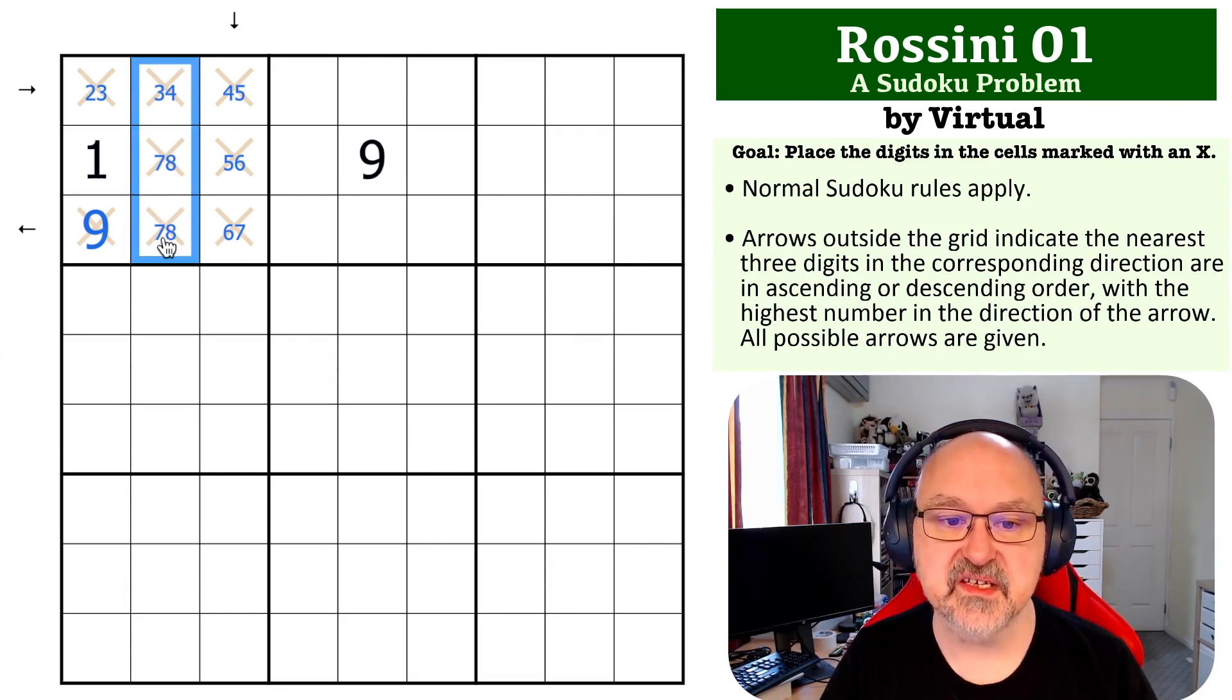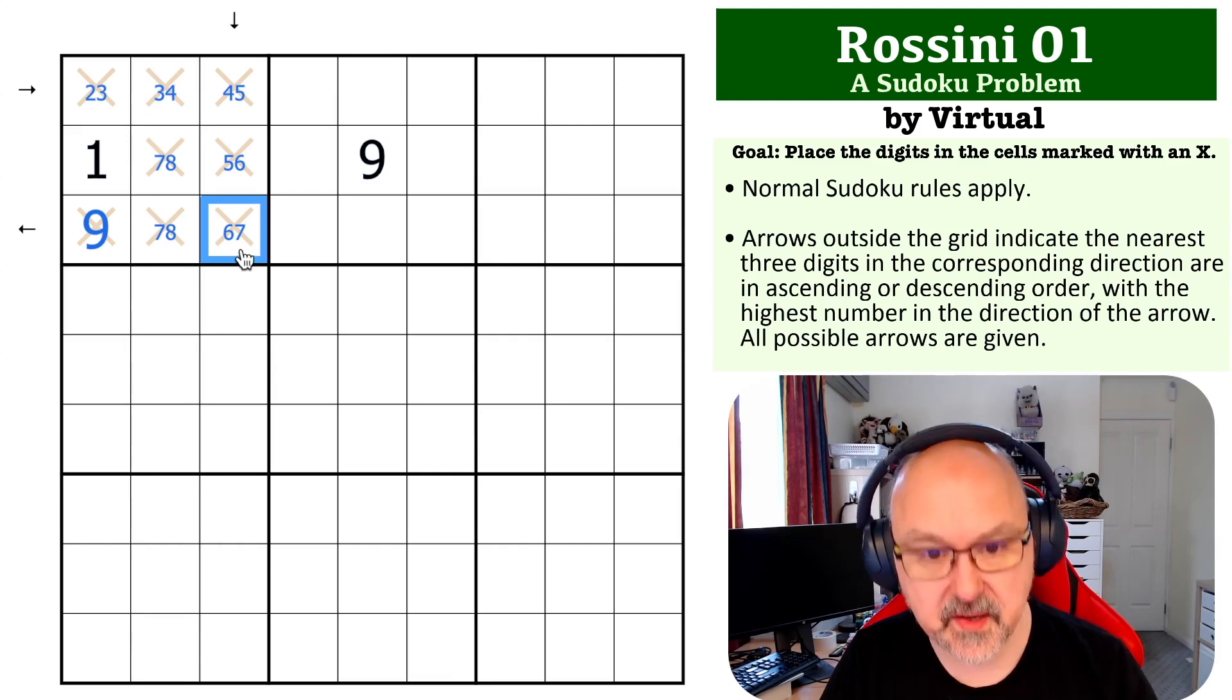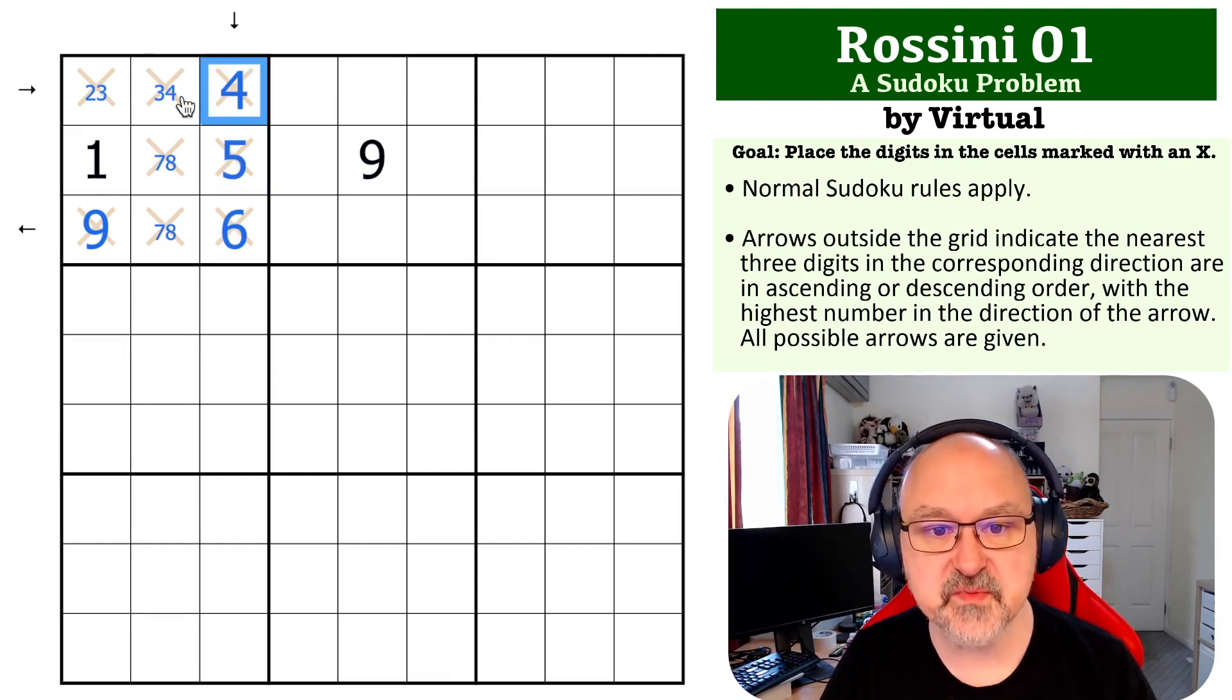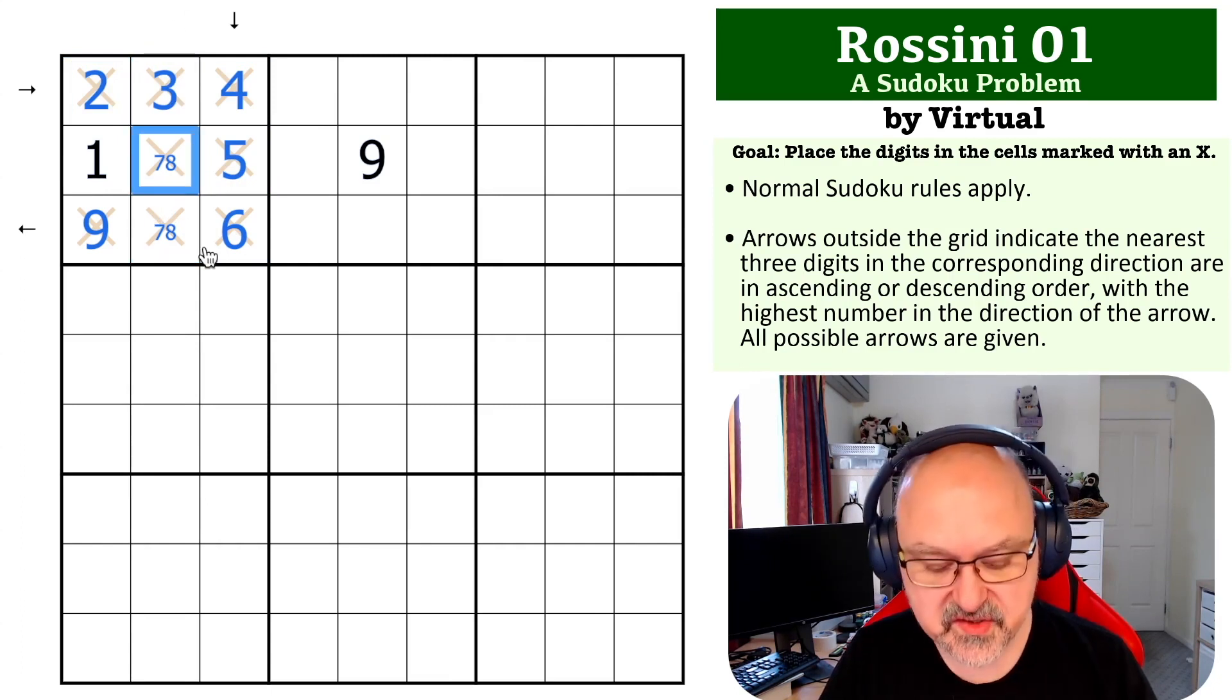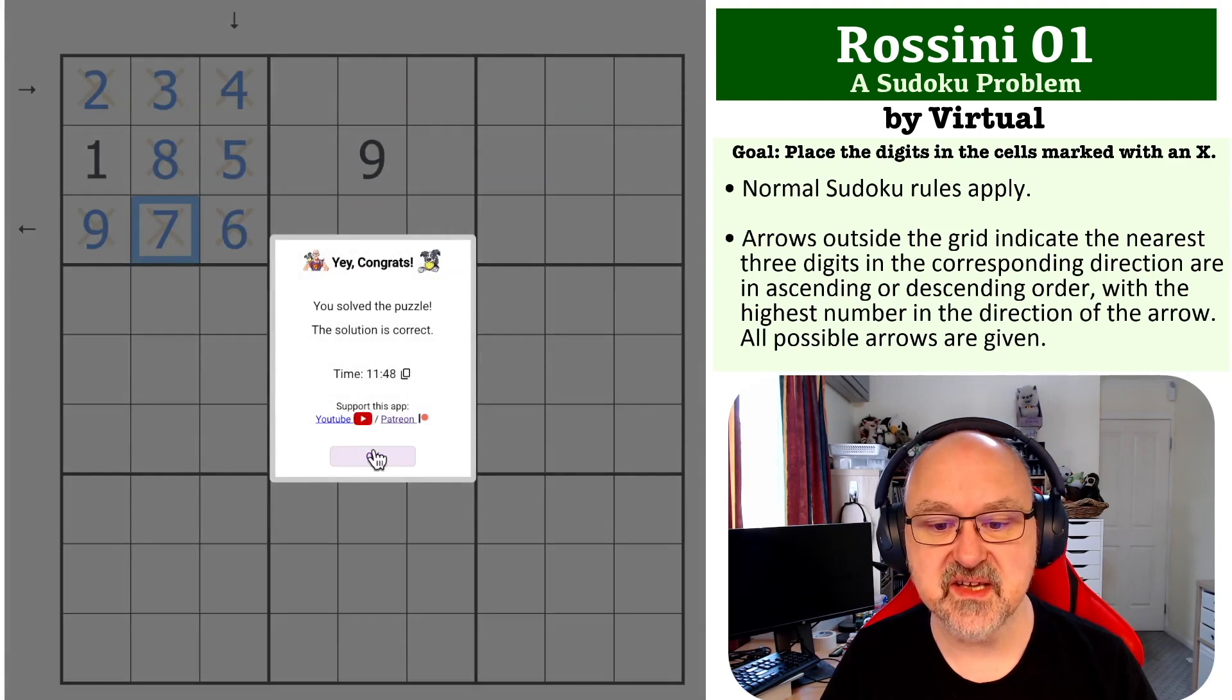So this has to be 7 or 8, which means that this becomes the 6, this becomes the 5, this becomes the 4, this becomes the 3, this becomes the 2, and we still need to make sure that this doesn't increase, because there's no arrow here. So this has to be the 8, and this has to be the 7.